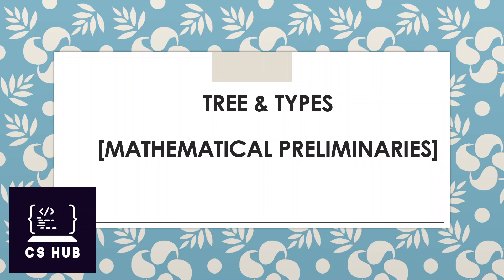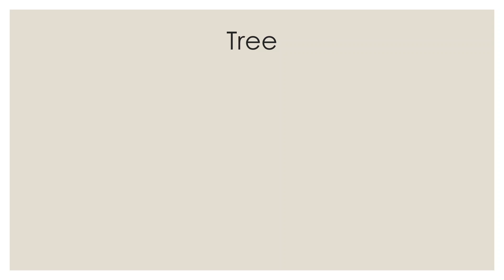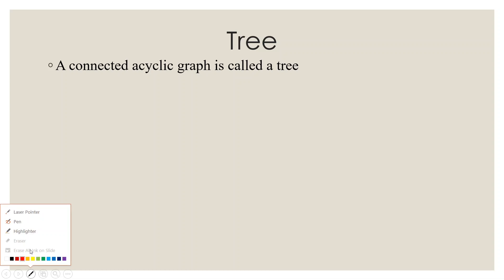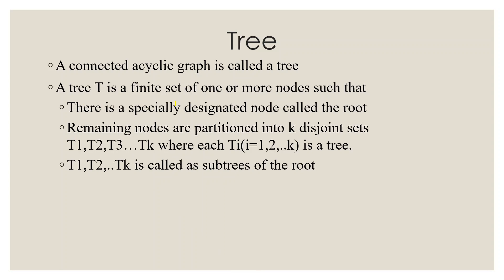Let's start with the definition of a tree. A tree is a connected acyclic graph. More formally, a tree T is a finite set of one or more nodes such that there is a specially designated node called the root. The remaining nodes are partitioned into K disjoint sets T1, T2, ... TK, where each Ti is itself a tree. T1, T2, ... TK are called subtrees of the root.